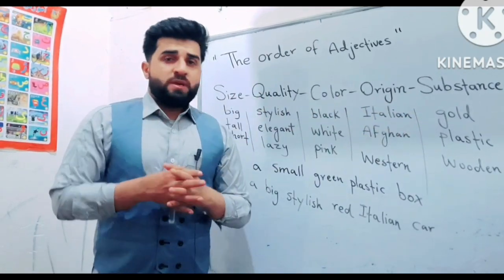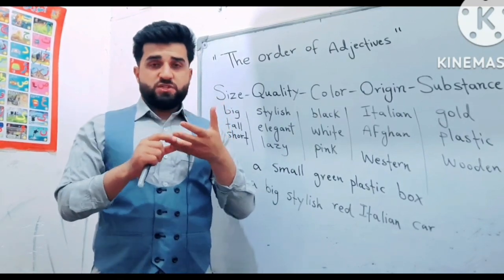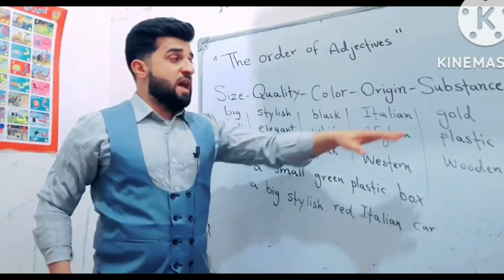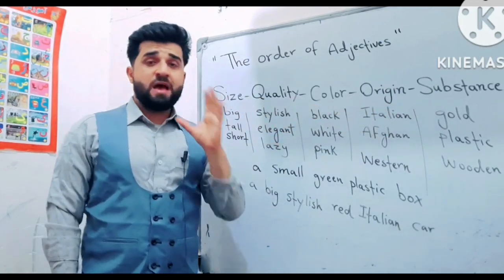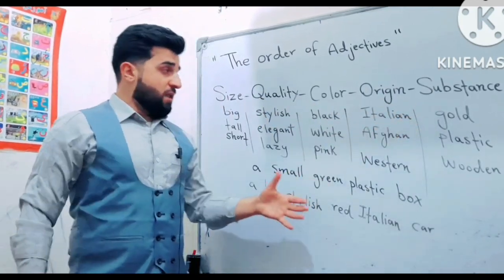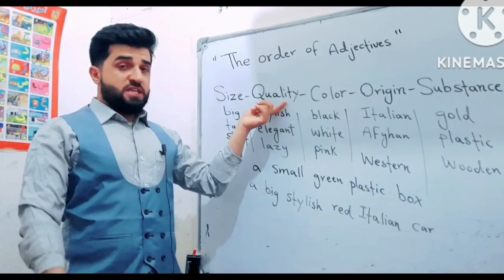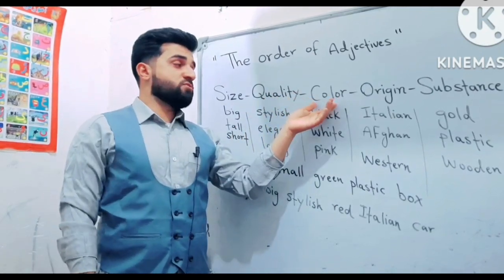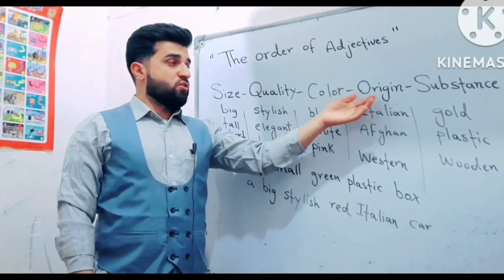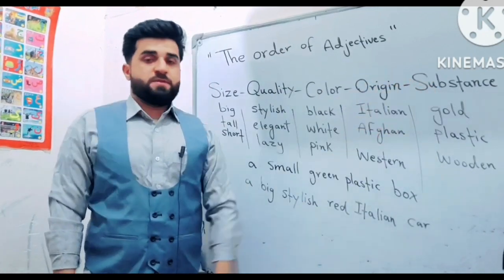It is possible that only two or three adjectives are used — that is fine. Very few words use all of these adjectives together. If Quality is not present, this order must still be followed. If Origin is not present and only Substance exists, then Substance comes at the end.